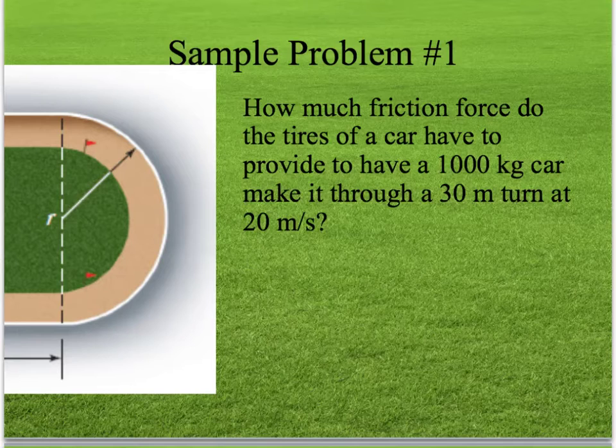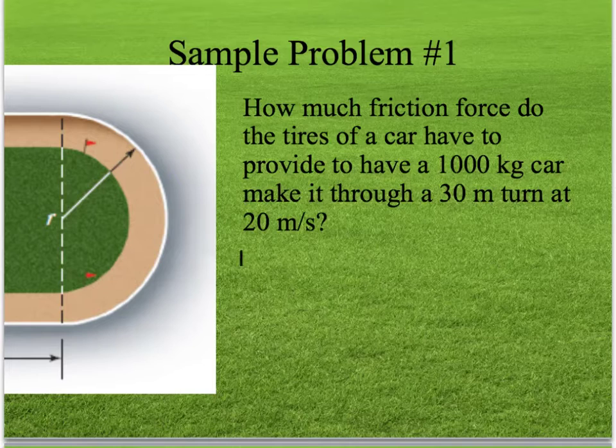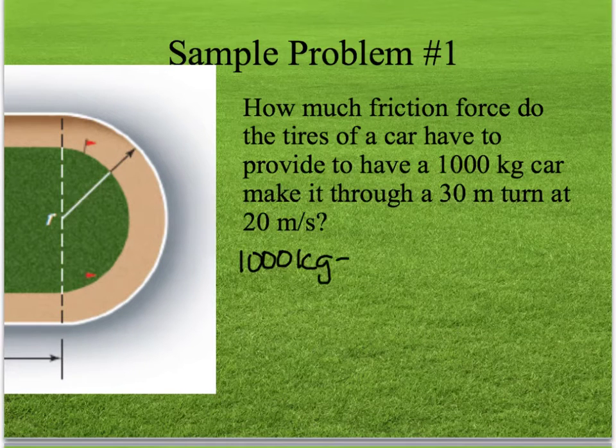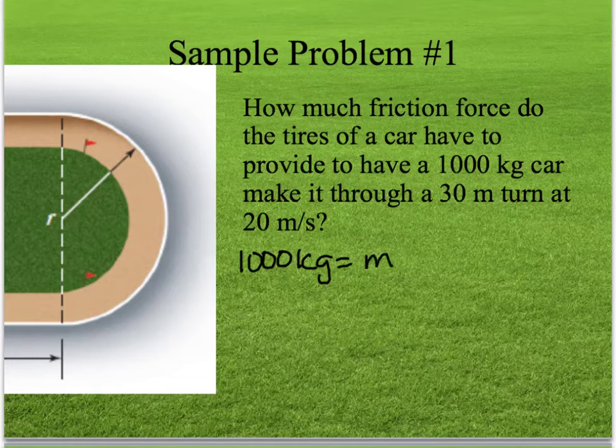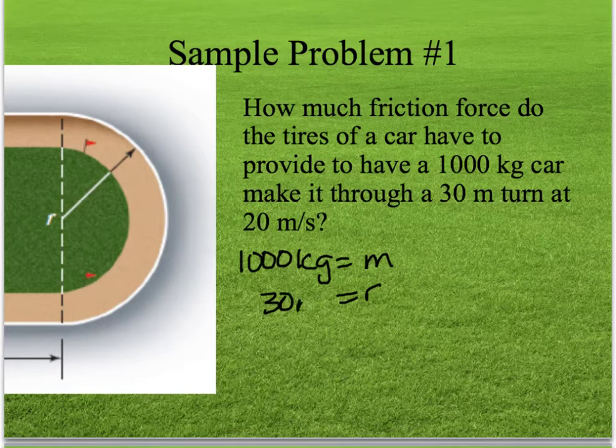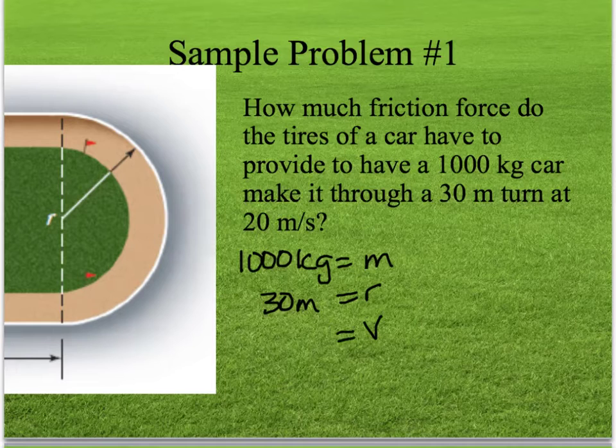So now a sample problem. This one's pretty straightforward. How much friction force do the tires of a car have to provide to have a thousand kilogram car, so that's our mass, through a turn of 30 meters, so that's our radius, at 20 meters per second? So our velocity is 20 meters per second.